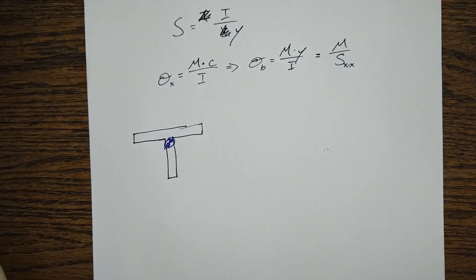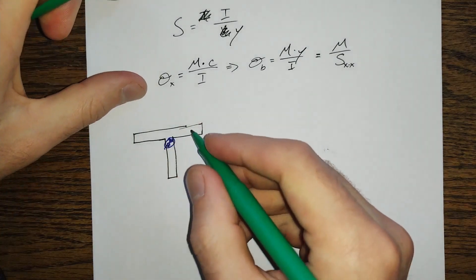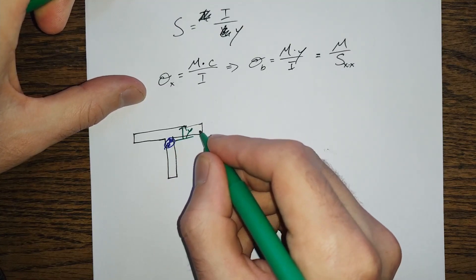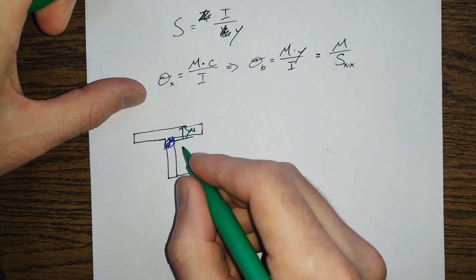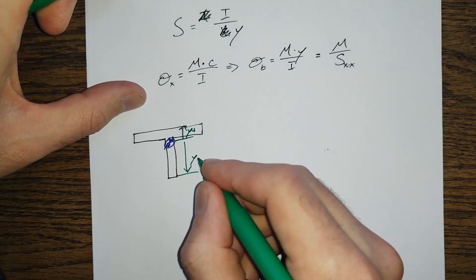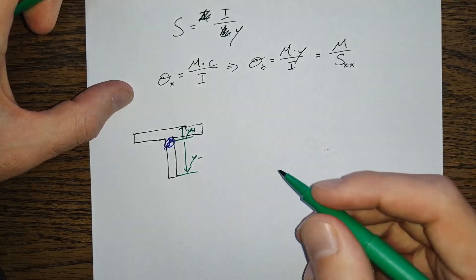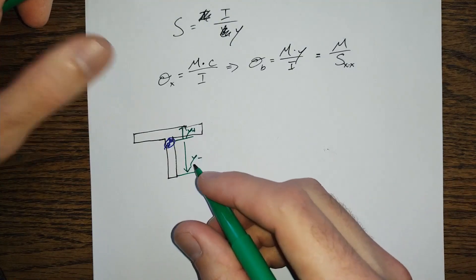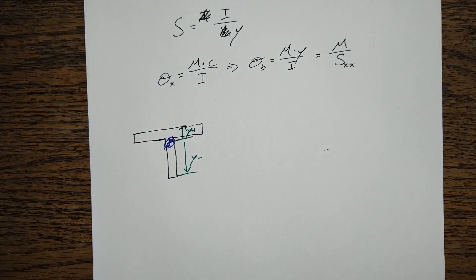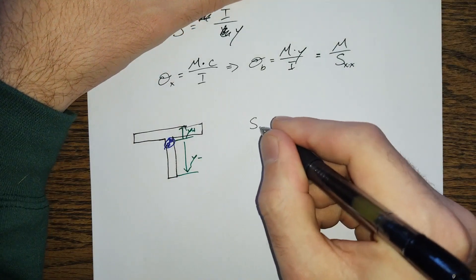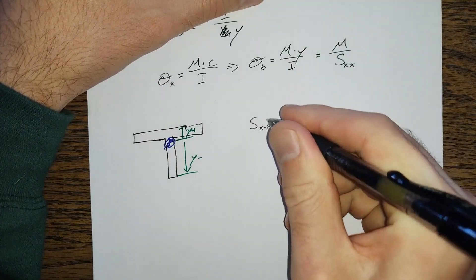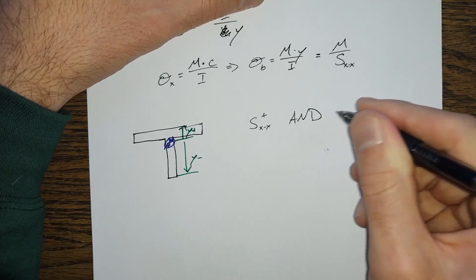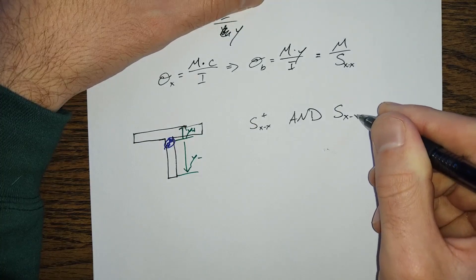And the distance to the extreme fiber in one direction, Y plus, is much shorter than the distance to the extreme fiber in the other direction. Here, we've got a Y minus. So here, really, we would be getting an SXX plus and an SXX minus.